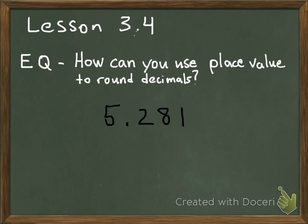Here's our next example: 5 and 281 thousandths. If we're rounding 5 and 281 thousandths to the nearest hundredth, the place right next to the hundredths place — the thousandths place — is going to do the talking and tell the hundredths place what to do. Since the thousandths place is 4 or less, it tells the 8 to stay exactly where it is. Everything in front stays the same; everything after gets dropped. Therefore, 5 and 281 thousandths rounded to the nearest hundredth is 5 and 28 hundredths.